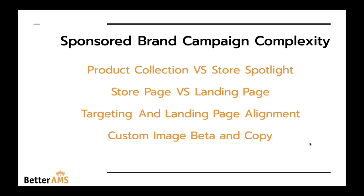To dive in a little deeper with sponsored brands campaigns, the first thing you need to decide when running a campaign is whether you want to drive to your product collection or a store spotlight. Once you select product collection, you'll be asked store page or landing page, and then you have targeting and landing page alignment because you need to write copy, figure out what you're targeting, and what products are in your headline search ad. There are also custom image beta and copy opportunities. When we look at performance across the board, the ACOS is typically within 3% of sponsored products — sometimes lower in a low-competition category, sometimes higher if you're competing against a big CPG company running only sponsored brands. If not within 3 to 5% of each other, you have issues with your sponsored brand creation or optimization.